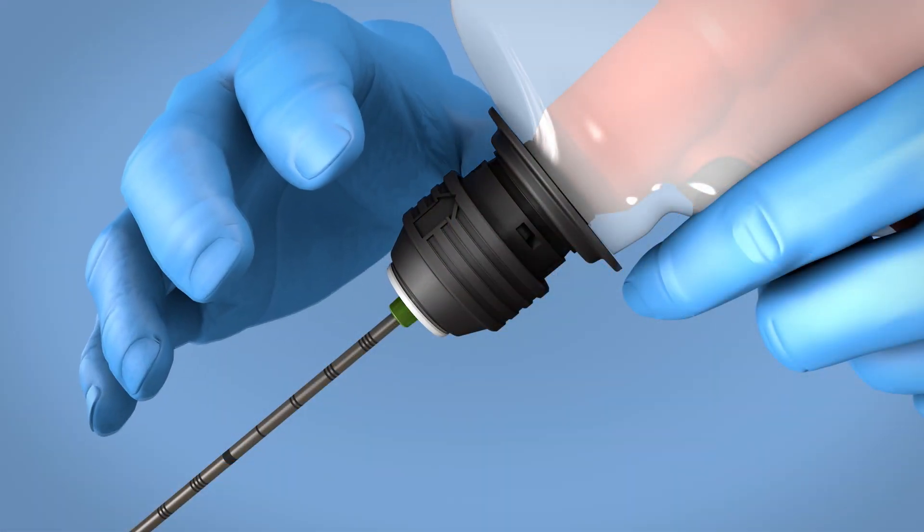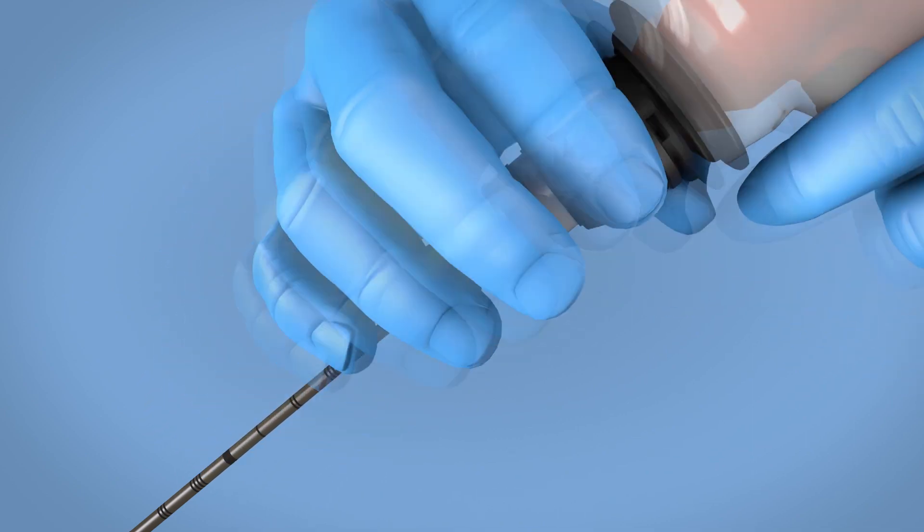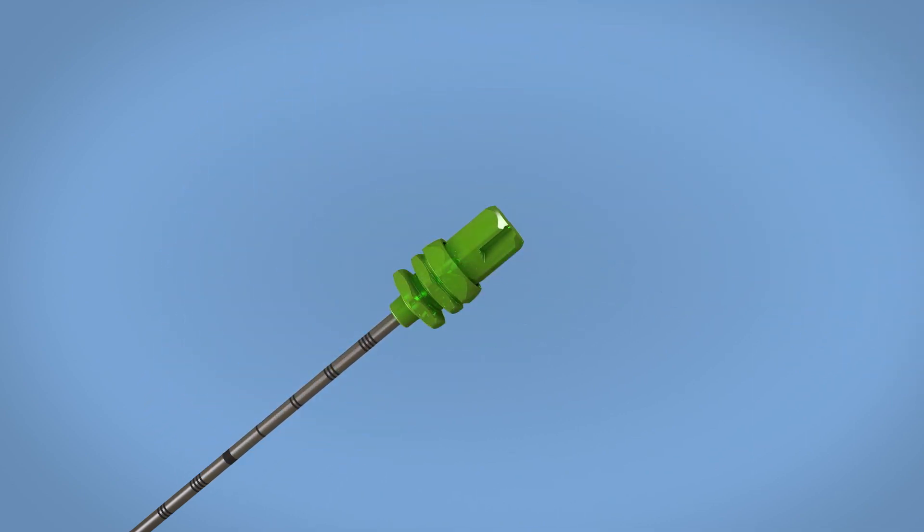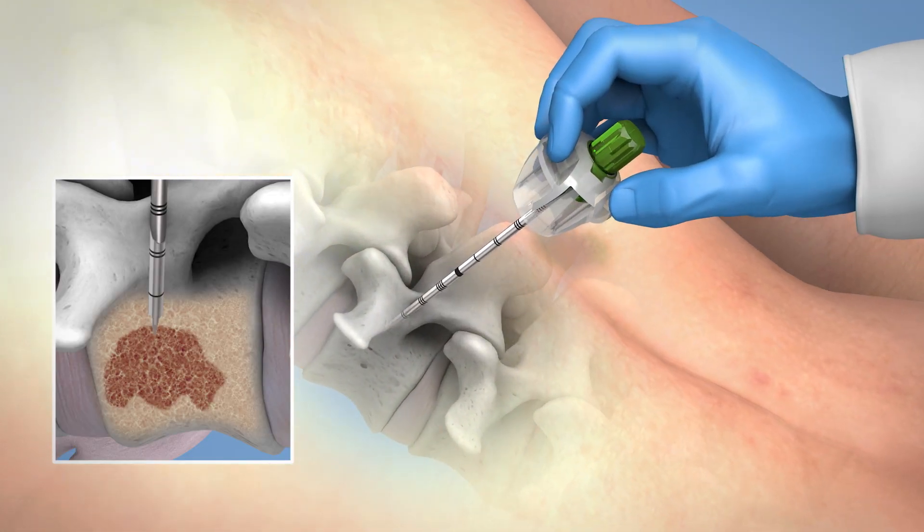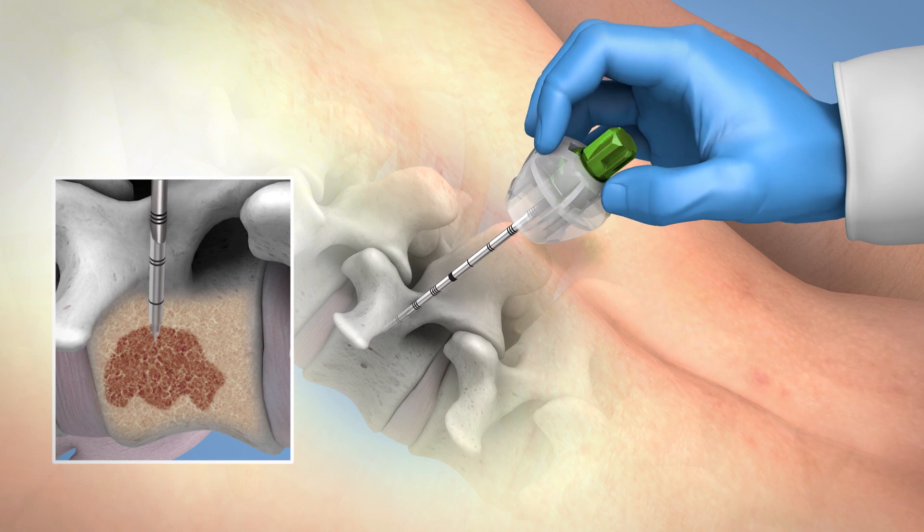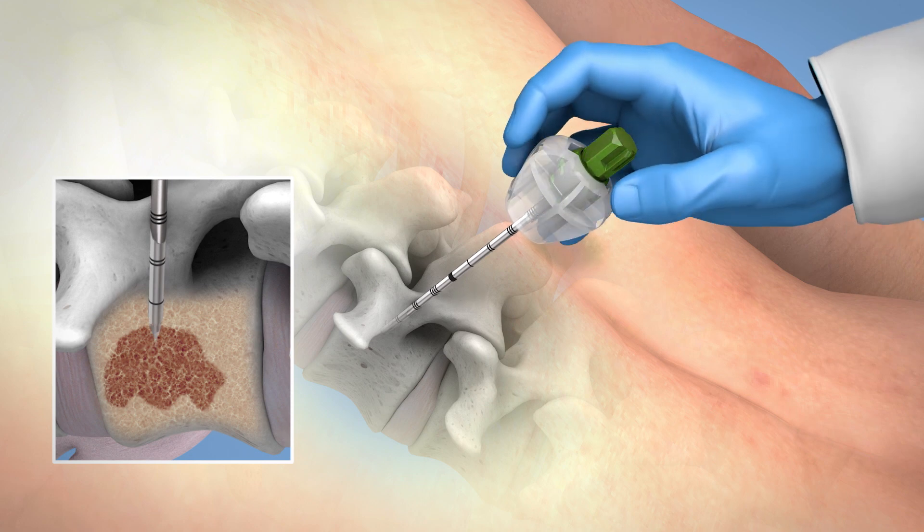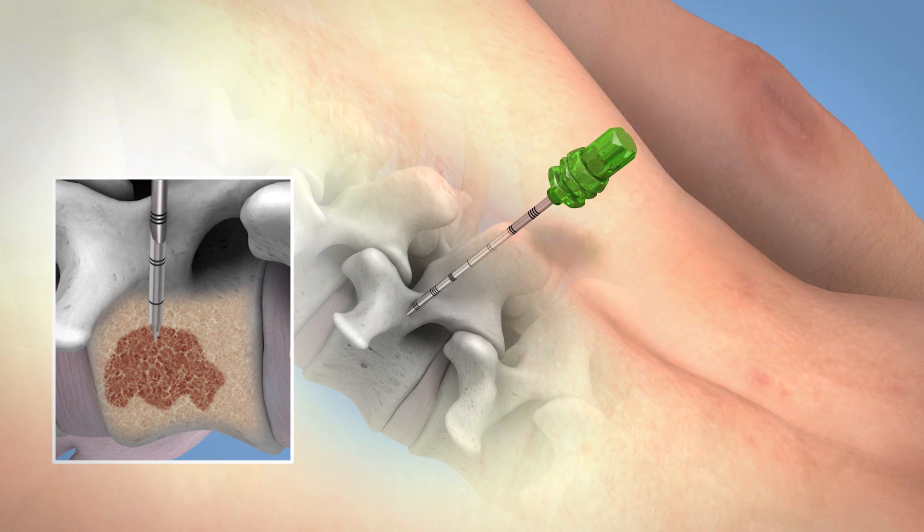Disconnect the driver from the needle by lifting up on the black collar on the connector and lifting the driver up and off the needle hub. If needed, use the manual handle for minor adjustments of the bone access needle set. Remove the clear handle by placing a thumb on the hub and pulling upwards and off of the needle set.